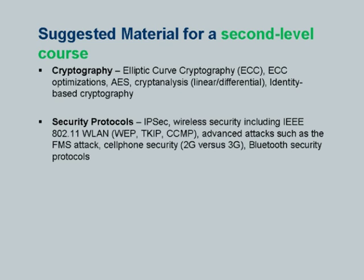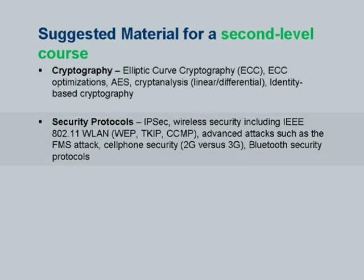The first course could be followed by an optional, more advanced second course. In cryptography, one can go from RSA to ECC (elliptic curve cryptography), from DES to AES (advanced encryption standard), and look at attacks on secret key schemes like differential and linear cryptanalysis. Something that came up recently is identity-based cryptography, which does away with digital certificates. From there, more advanced protocols like IPsec used in VPNs, and the whole area of wireless security — spanning wireless LANs, cell phone security (2G and 3G), and Bluetooth.